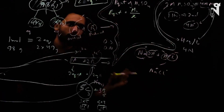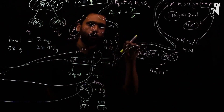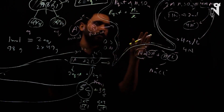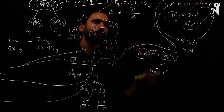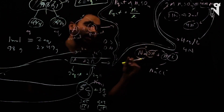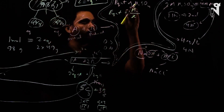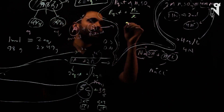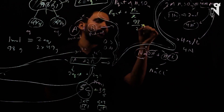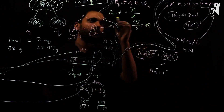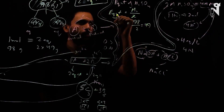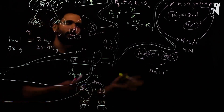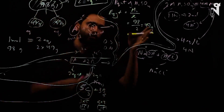So equivalent weight of H₂SO₄ = 98 / 2 = 49 grams per equivalent. When referring to moles, this is called gram equivalents. So the formula is: equivalent weight = molar weight / X.